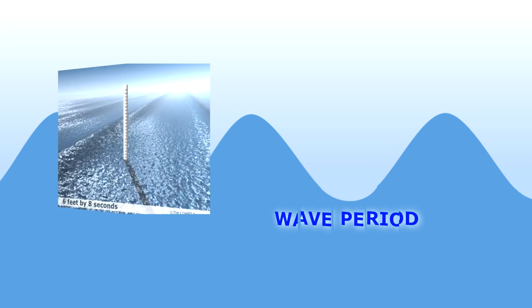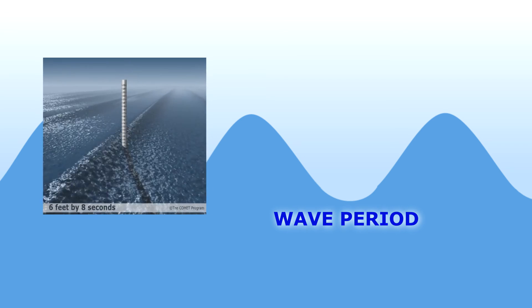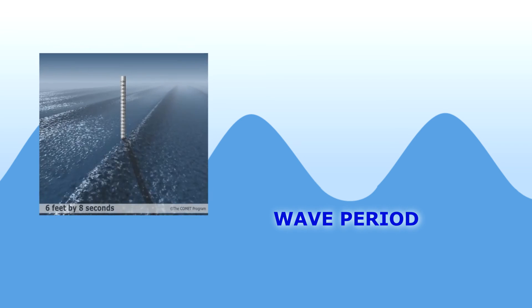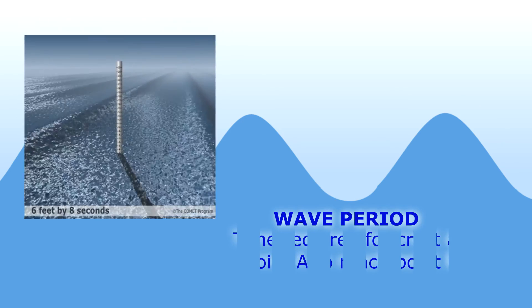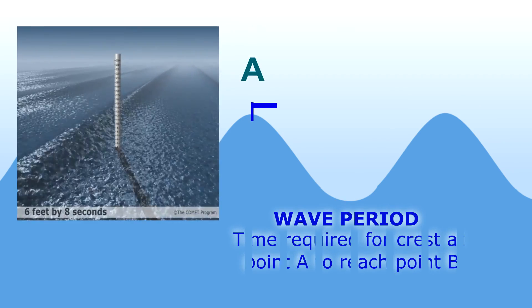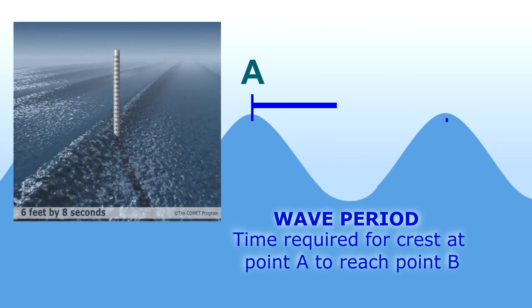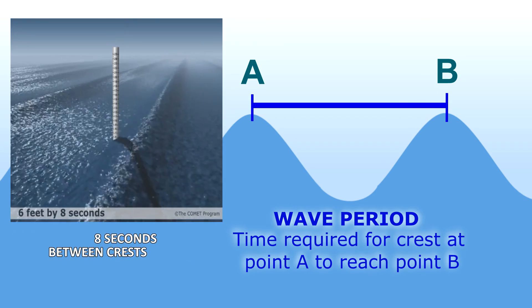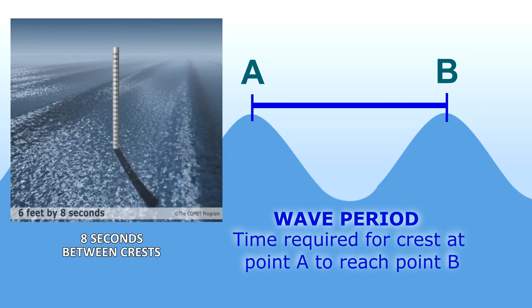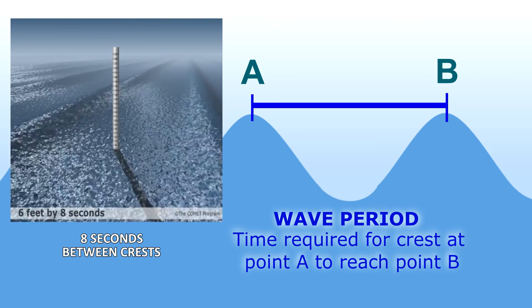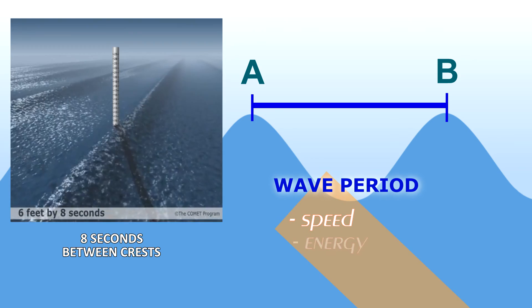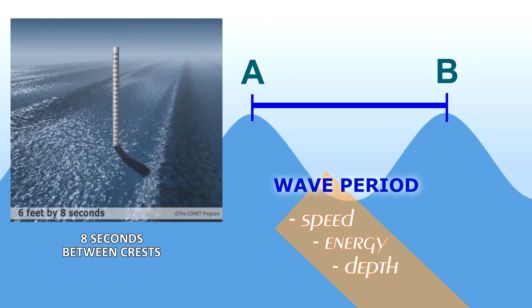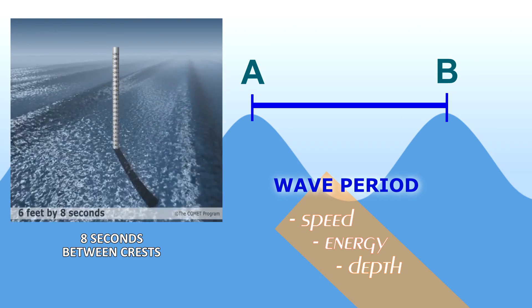Wave period is a little more complicated, but arguably the most important of all three of the fundamental characteristics of waves. The simple definition of wave period is how long it takes for two successive wave crests, or troughs, to pass a fixed point in the ocean, such as a buoy. Wave period is also related to several other parameters, such as wave speed, how energetic it is, and how deep it extends into the ocean.